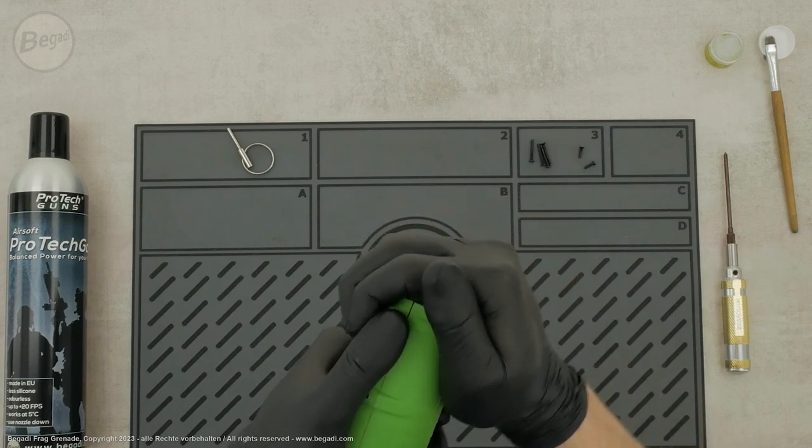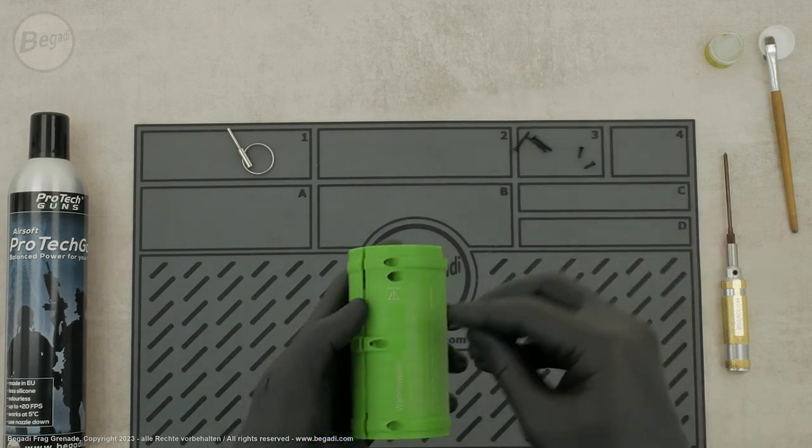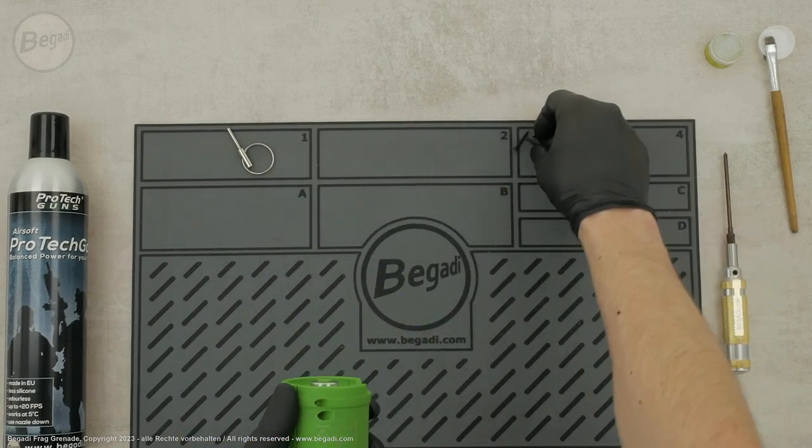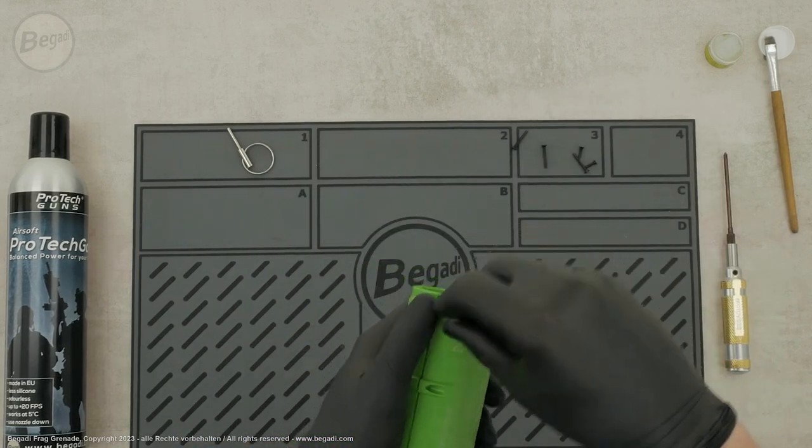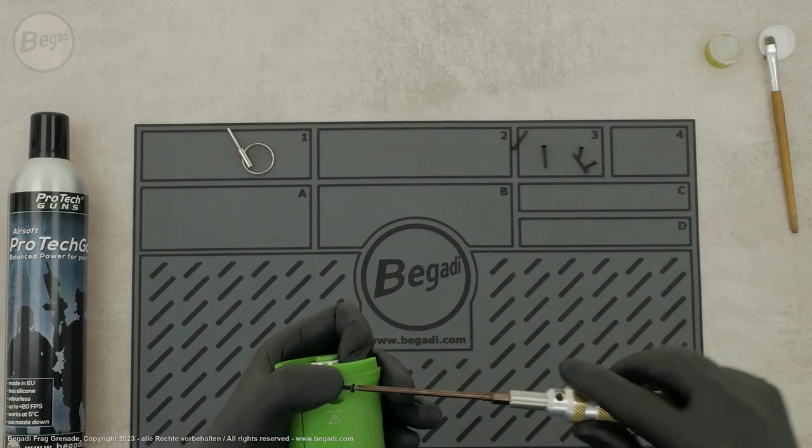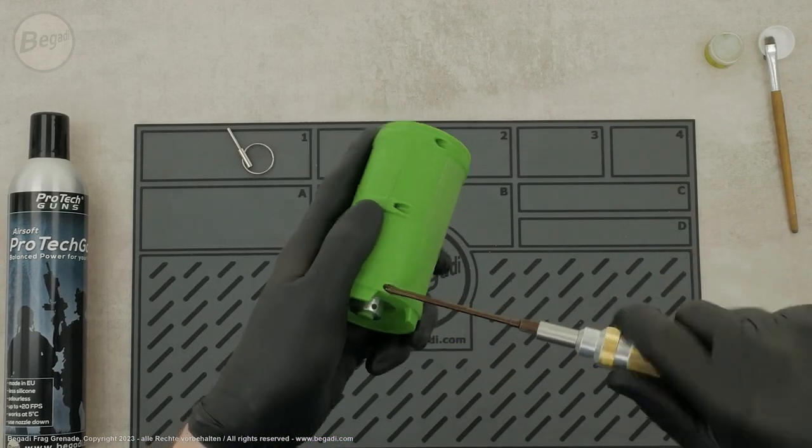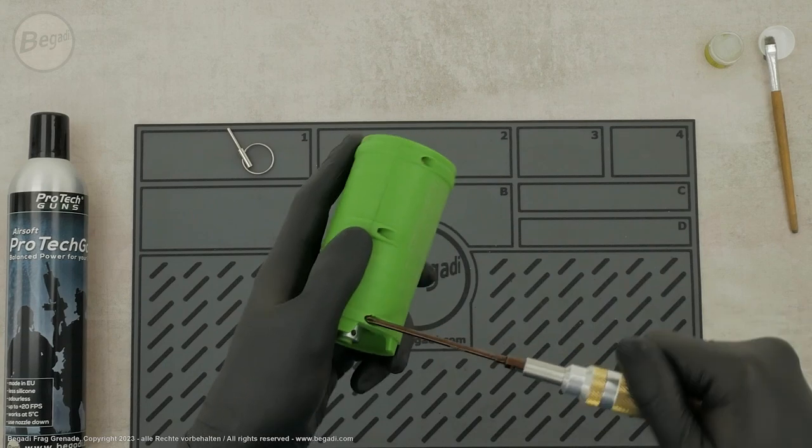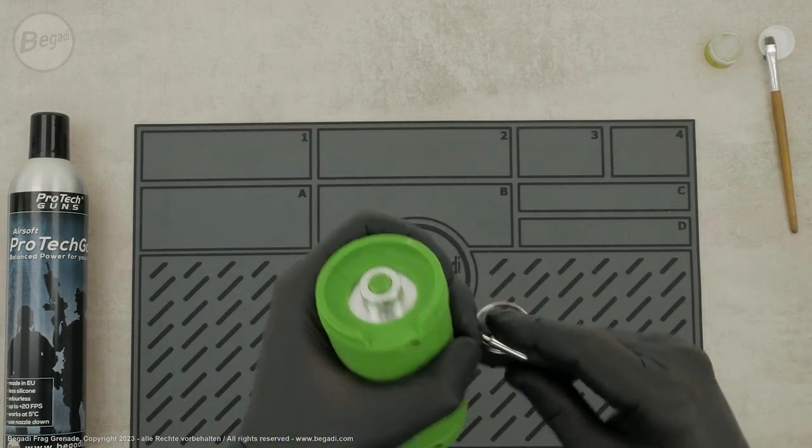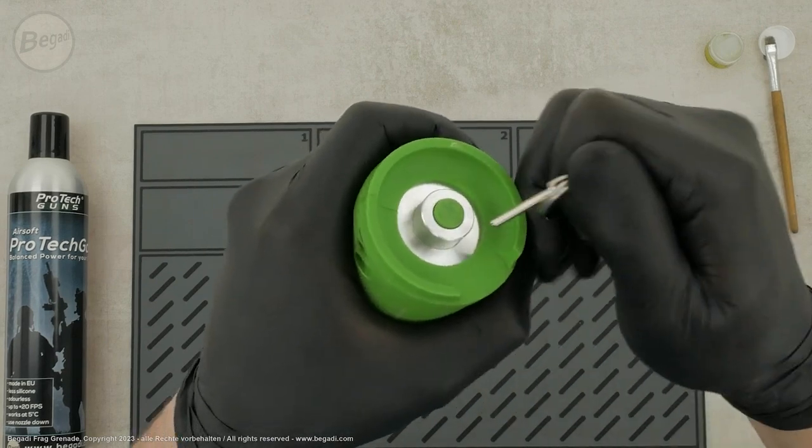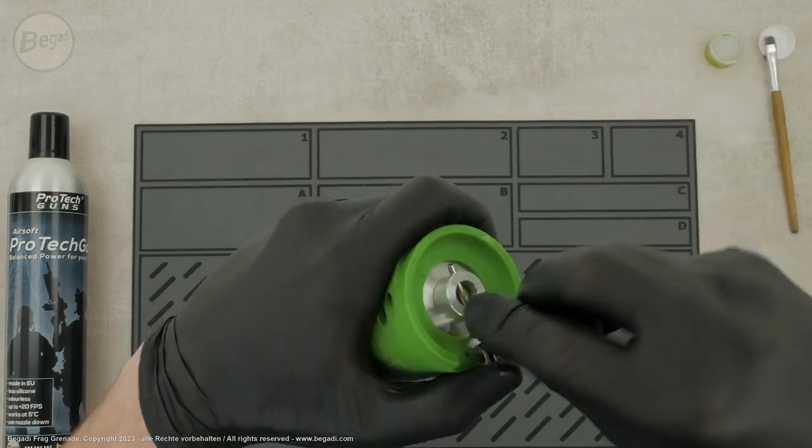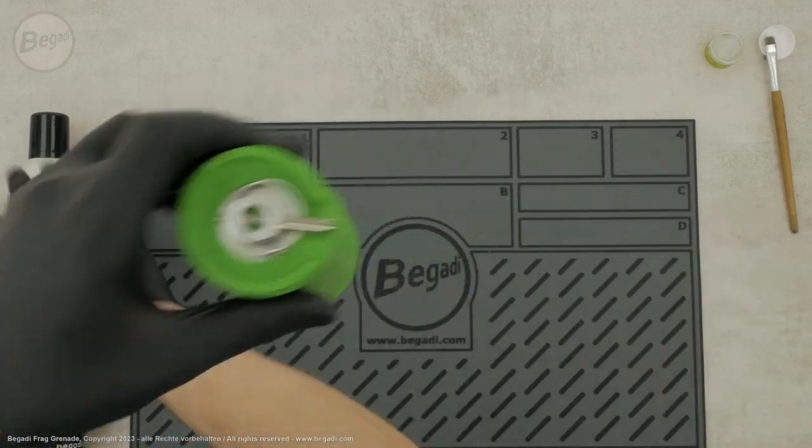Now, you can place the remaining shell segment and press it firmly together. Tighten the six connecting screws again. When screwing them in, make sure there are no significant gaps, and only tighten the screws by hand. Press the triggering mechanism down and secure it with the safety pin. Fill the grenade with a small amount of appropriate propellant gas to check the sealing.